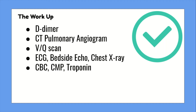Other tests include a bedside echo where the provider will look at the right ventricle for dilation and strain. A chest x-ray is typically normal for a PE, but it's also looking for other things to rule out like pneumonia or a pneumothorax. Then to cover all the bases, a CBC, CMP, and troponin will most definitely be ordered as well.